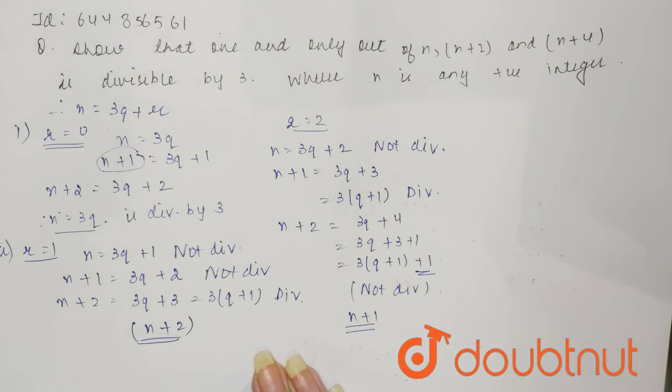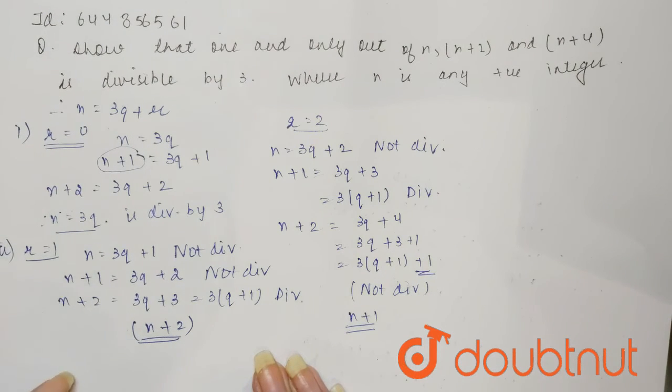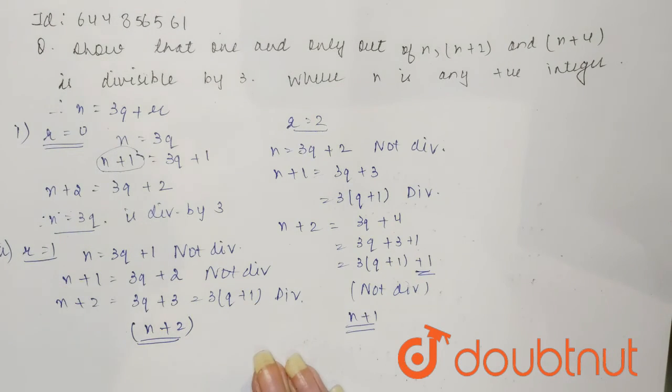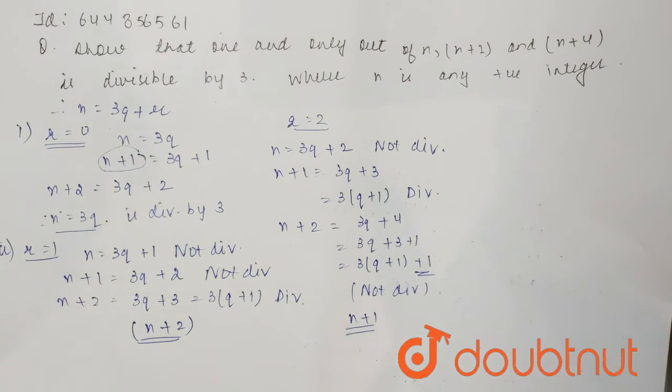So from these three cases, we can say that only one and only one out of n, n plus 1 and n plus 2 is divisible by 3. Thank you.